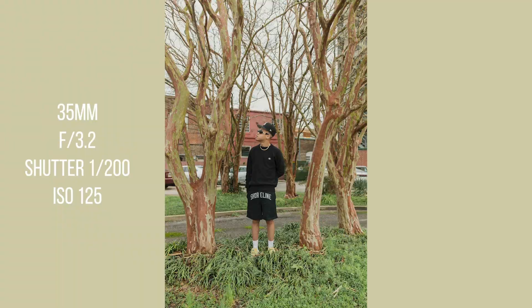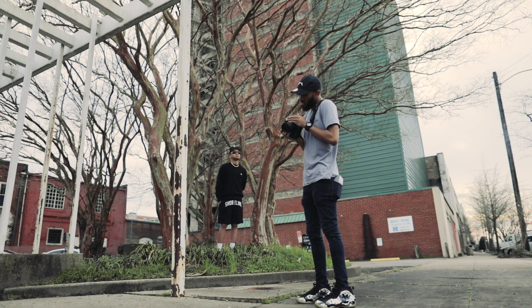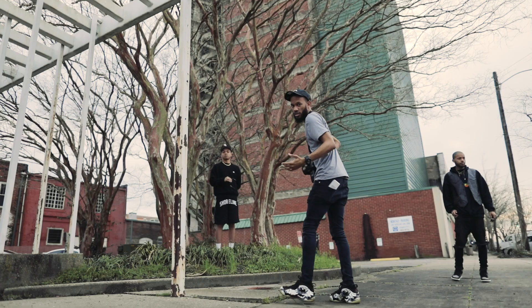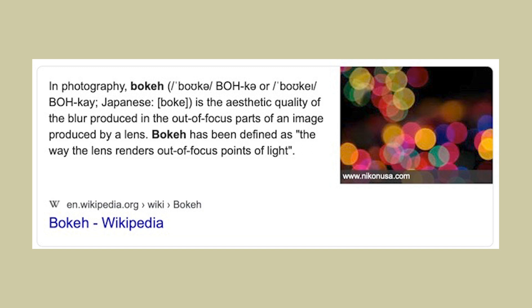Now we're going to get closer up and take this from f/3.2 to f/1.4 so you can see that bokeh. Bokeh is not the compression — I don't know why I had that backwards. Bokeh is actually the quality of the blur that you see in the picture. According to Wikipedia, it says the aesthetic quality of the blur produced in the out-of-focus parts of an image produced by a lens. That also depends on the aperture blades in the camera — the more blades, the better the circle. Just wanted to clear that up before we go any further.